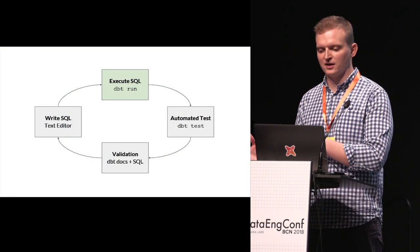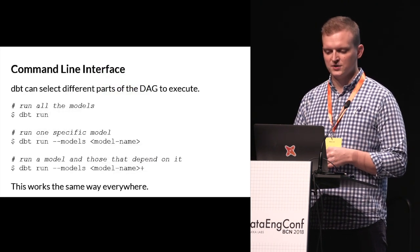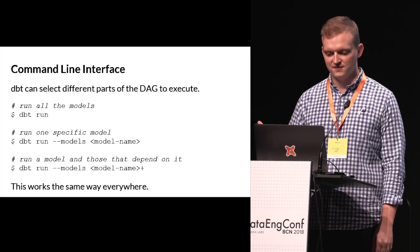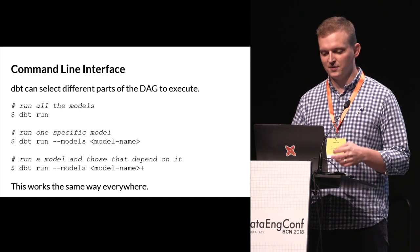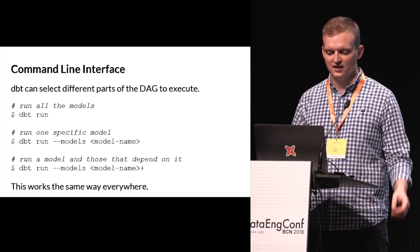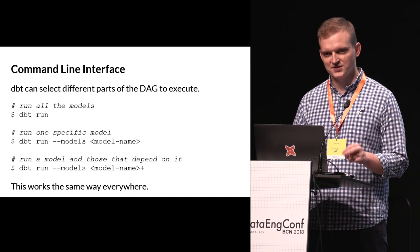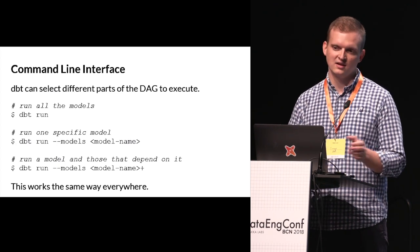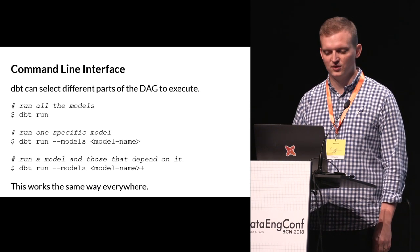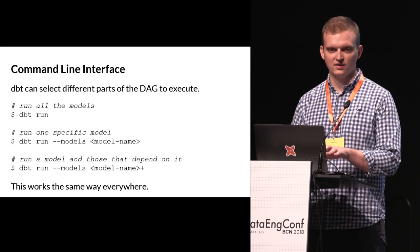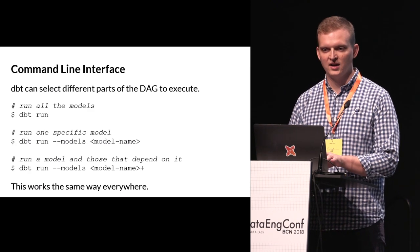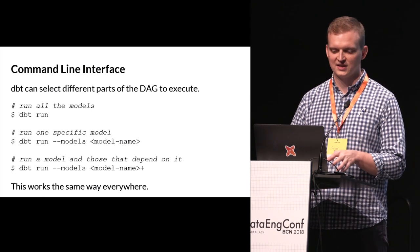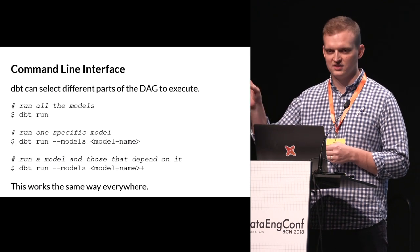Now let's talk about how we actually use DBT to build these DAGs in the warehouse. DBT can select different parts of the DAG to execute. If you just call dbt run, it will build all models in the entire project. If you provide model selection syntax, you can specify which models to build — one specific model, a model and all downstream models, a model and all its inputs, and so on. Importantly, this works the same way everywhere — development works exactly the same as production. There's no special framework needed for production: just pip install dbt, move the code over, run dbt from production, and everything will work.